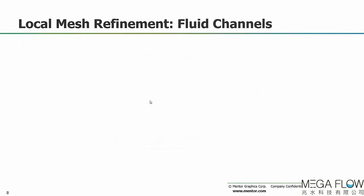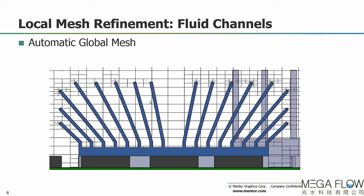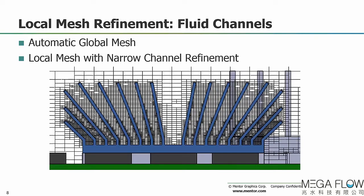The other local mesh control relates to fluid channels. Looking at the mesh after automatic global mesh generation of a heatsink, the process has resolved all the geometry features, but we may want to add mesh in the channels between the fins. This is done using narrow channel refinement, which focuses the mesh directly in those channels for a finer resolution within the channels themselves.